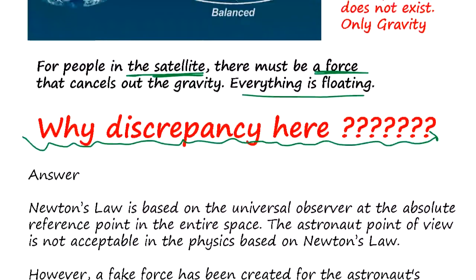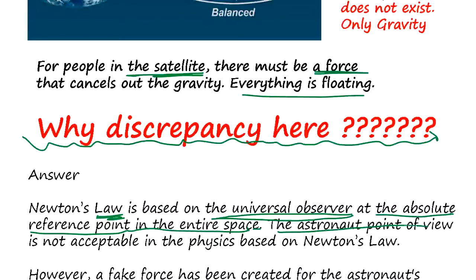Okay, so here's the answer. Newton's law is based on the universal observer - there is an absolute reference point somewhere in space and absolute time going. And astronaut's point of view is not the Newton's view. So you cannot use the astronaut's viewpoint floating in the air as the viewpoint of physics.